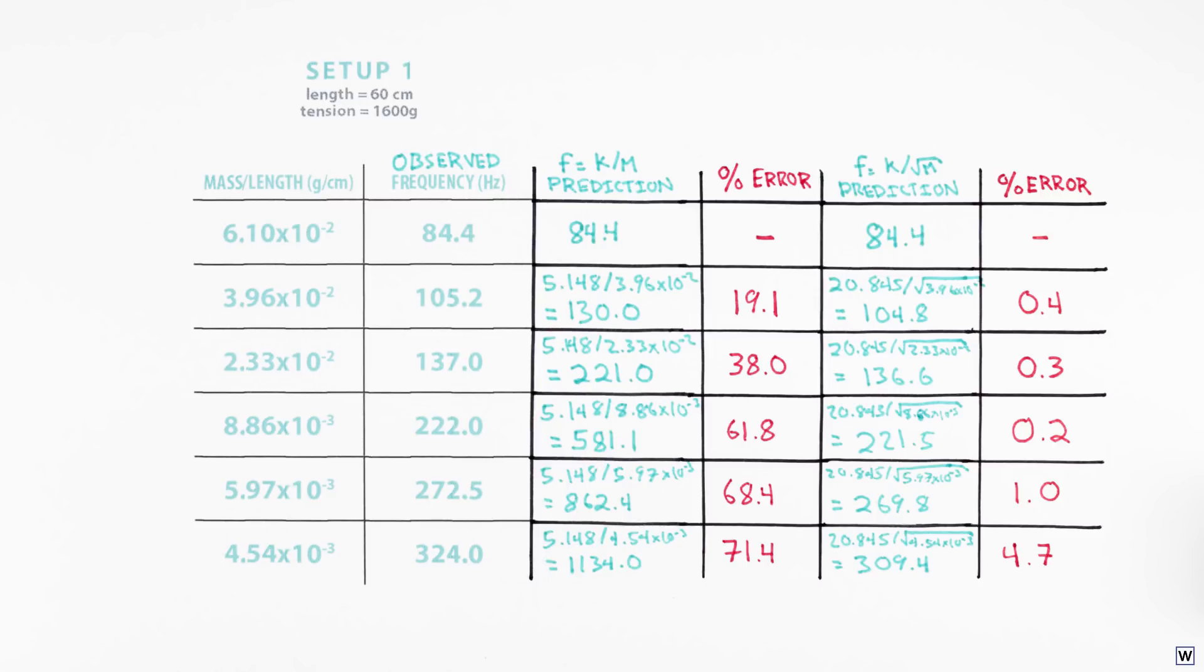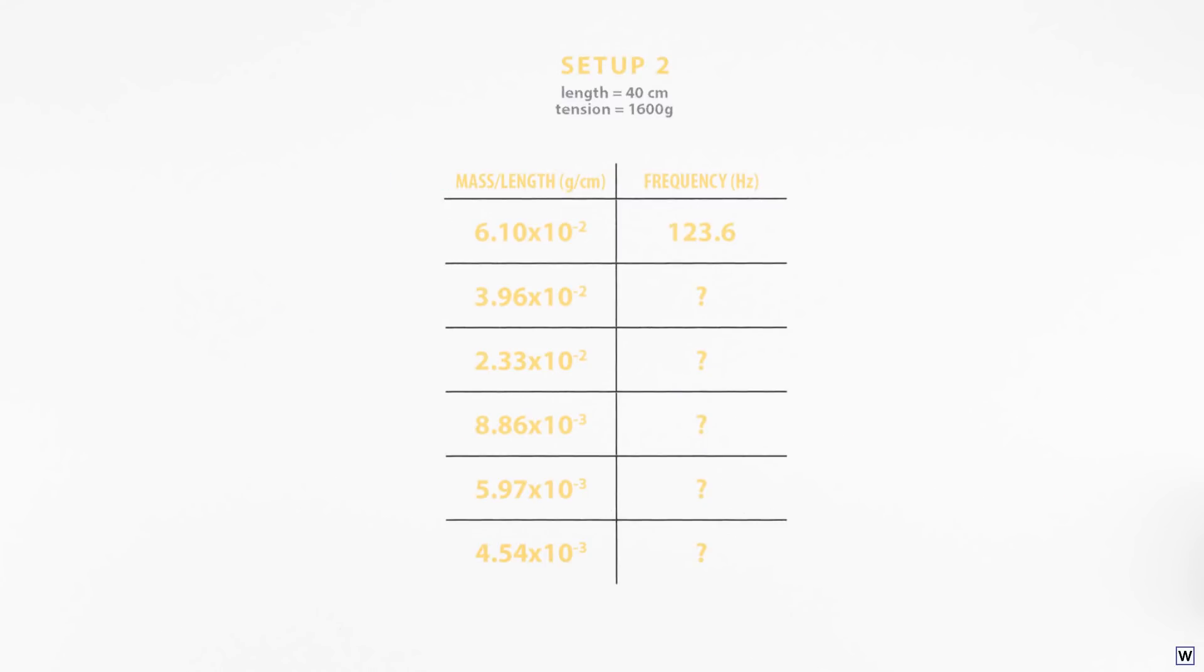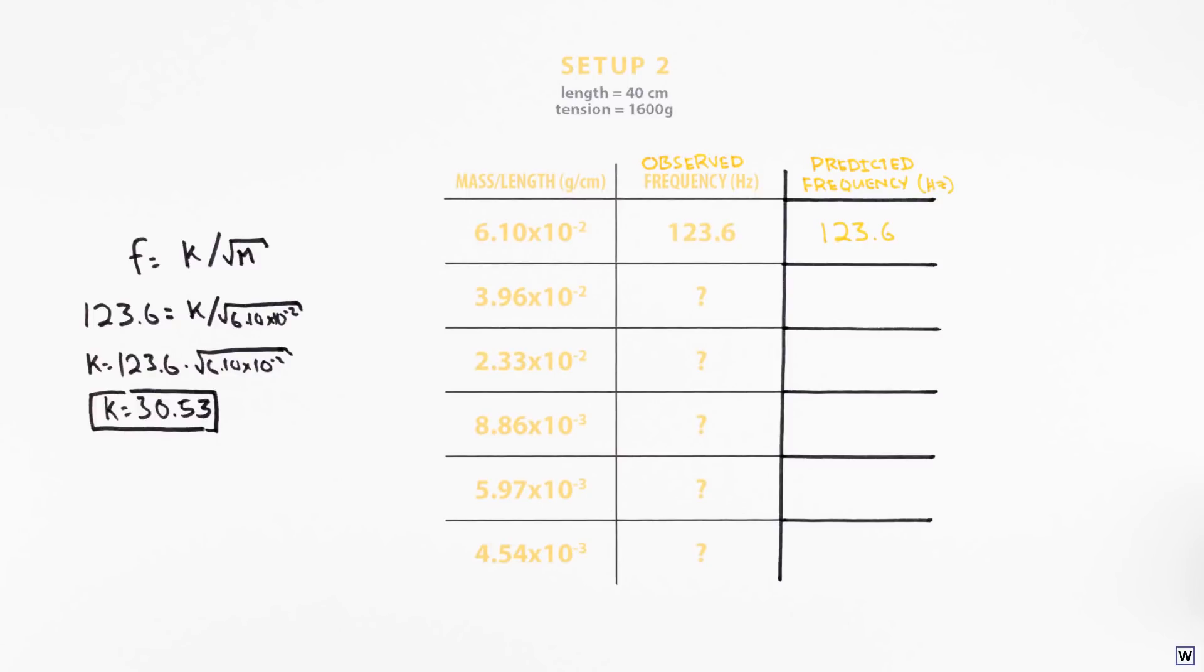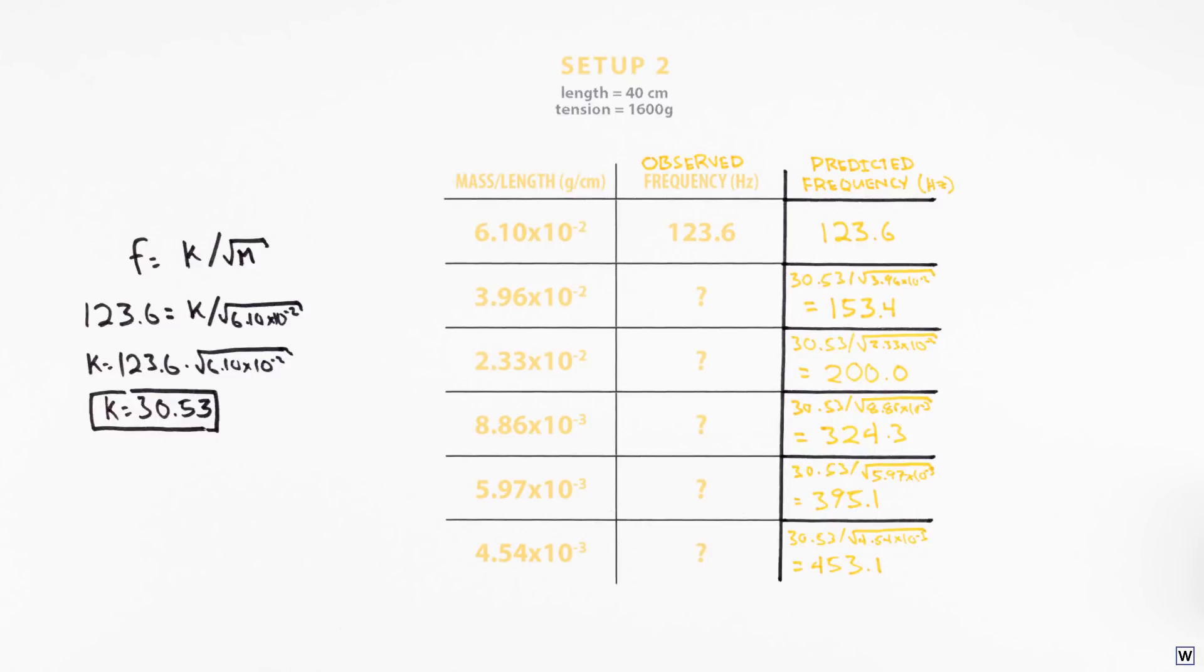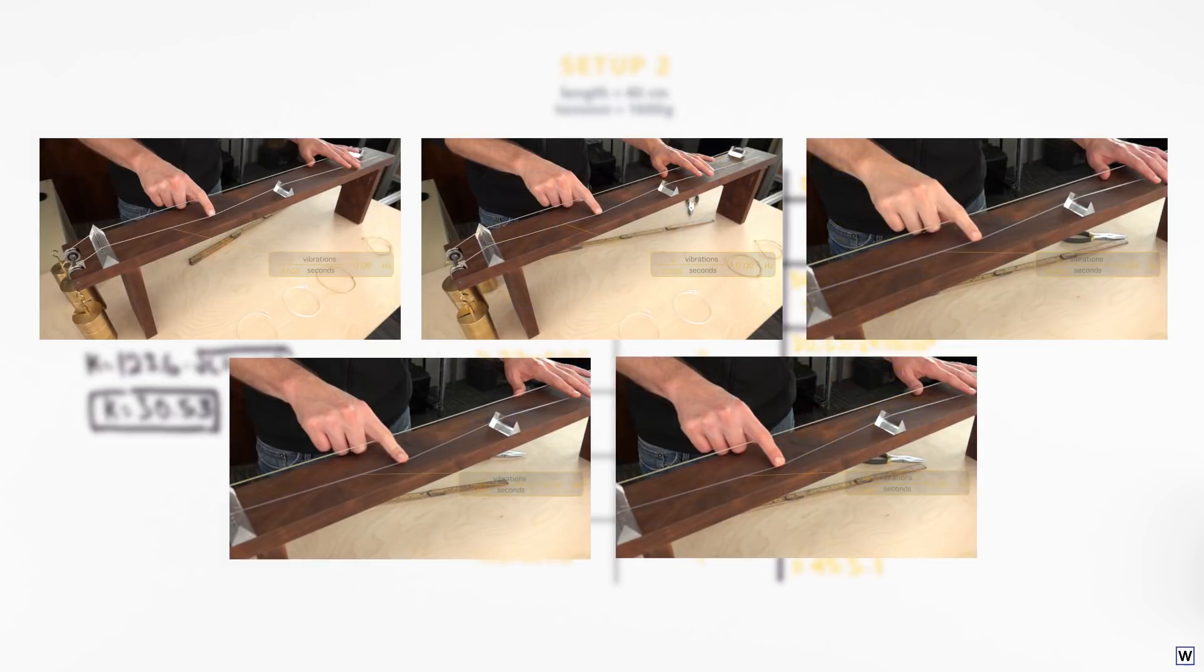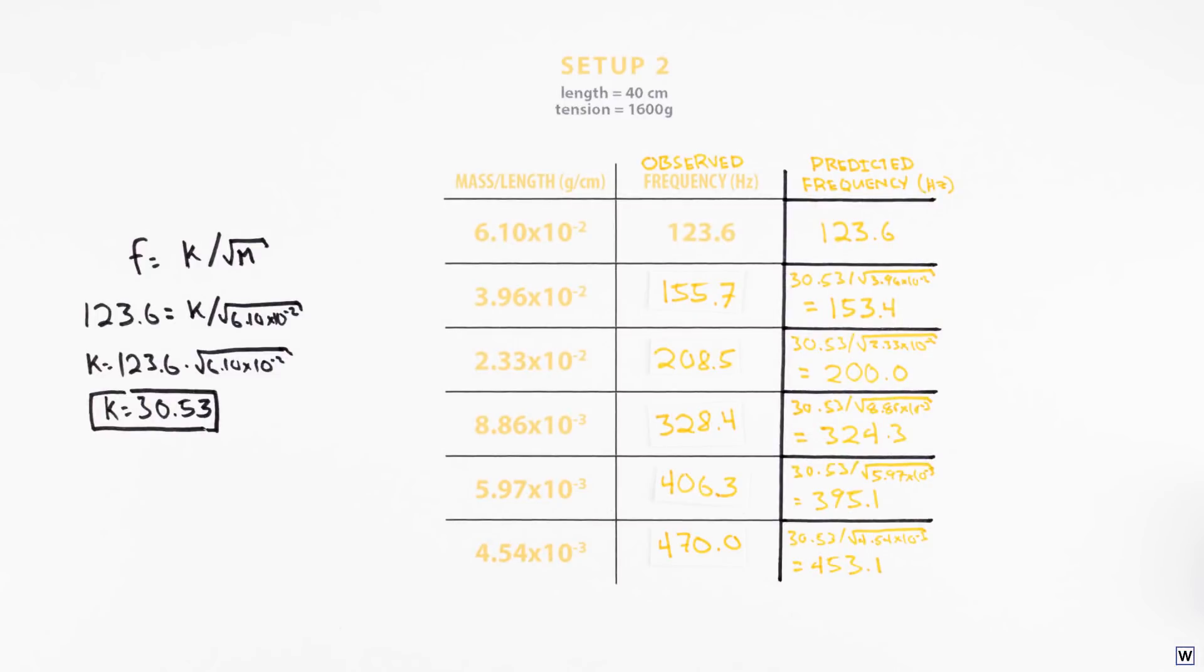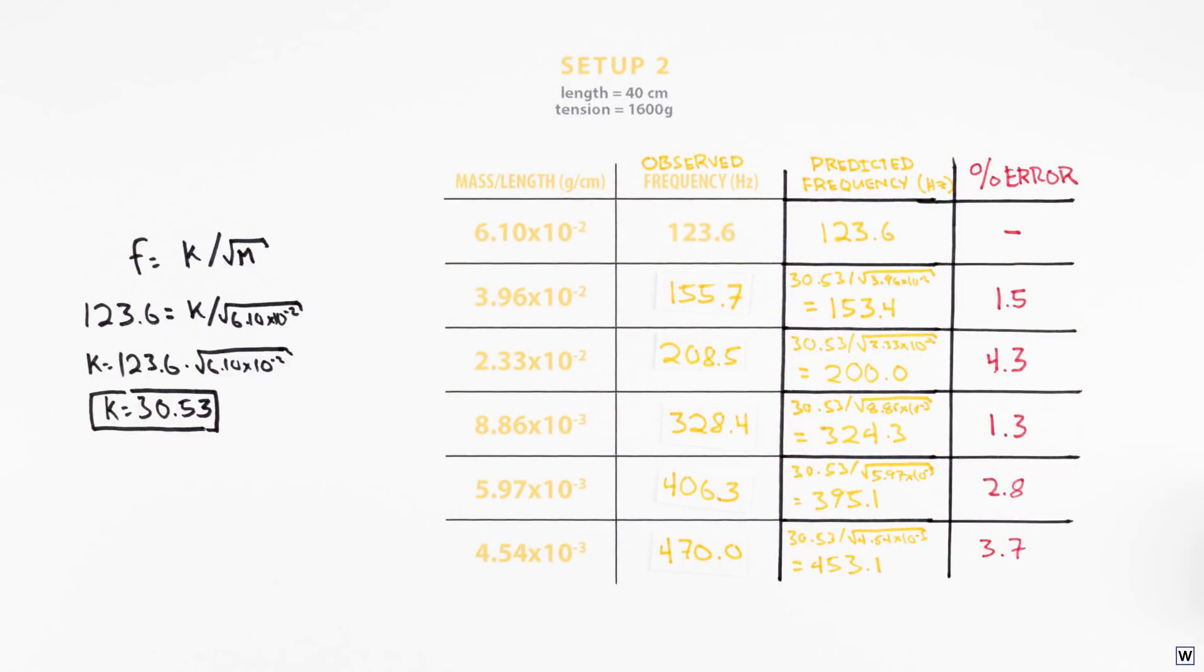Now, to be really sure here, we need to make predictions for our string setup we haven't tested yet. Computing k, using our single observation at this length and tension, and using our new formula will compute frequencies for our experimental setup. And now, making observations at these mass values, we see quite good agreement between our predictions and observations. We have found Mersenne's third and final law.